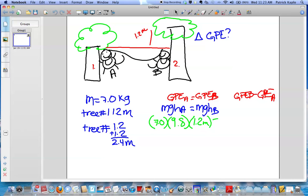We're going to set that equal to the same mass, which is 7.0, times 9.8, which is G, times 2.4, which is the height of tree number 2.